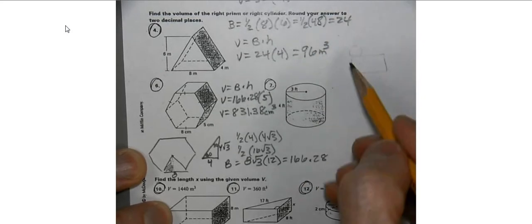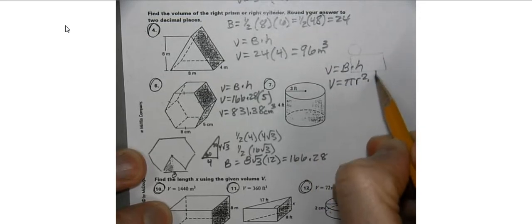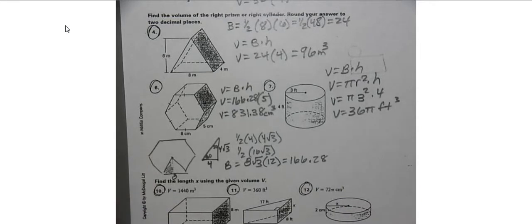The volume is, again, going to be base times height. Our base's formula is pi r squared times our height. So if our radius is 3 and our height is 4, the exact answer is 9 times 4, which is 36 pi feet cubed. 36 times pi gives us 113.1 feet cubed.